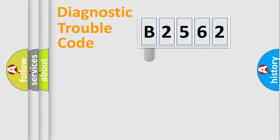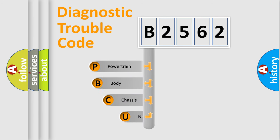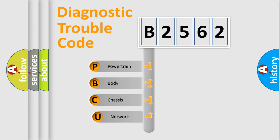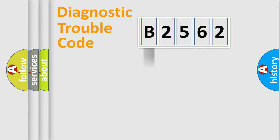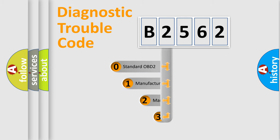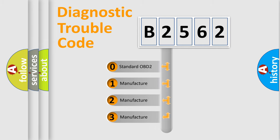Let's look at the history of diagnostic fault code composition according to the OBD2 protocol, which is unified for all automakers since 2000. We divide the electrical system of an automobile into four basic units: Powertrain, Body, Chassis, and Network. This distribution is defined in the first character of the code.